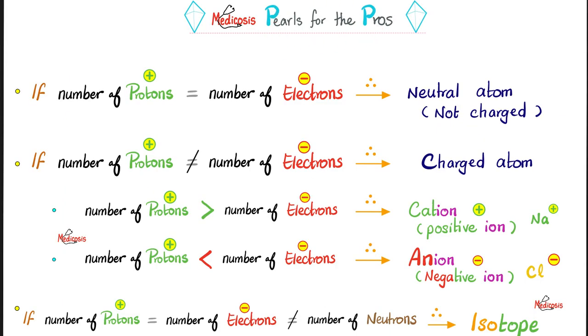Some pearls for the pros. If the number of protons equal the number of electrons, that's a neutral atom carrying no charge. If we have protons and electrons that do not equal one another, then we have a charge. What kind of charge? Is it positive or negative? Well, it depends. If the number of protons exceed the number of electrons, it's a positive ion. We call this a cation.